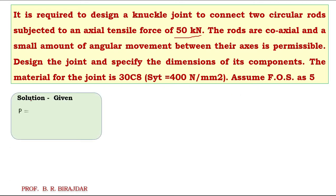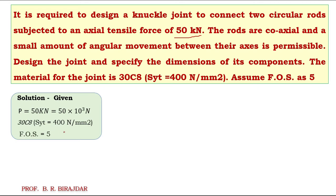The given data: first, load P = 50 kilonewton, converting to newtons: P = 50 × 10³ newton. Second, material is 30C8, with Syt = 400 newton per mm square. Third, factor of safety = 5.